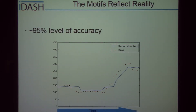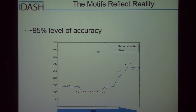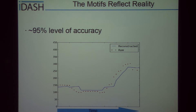As a check to make sure that the motifs reflect reality, we collected the data, as seen in the red dots, over time, and matched these each to a motif, making this into a reconstruction of the original raw data. There was a 95% level of accuracy, and we expect the 5% level of inaccuracy to be caused by extreme rates of change.